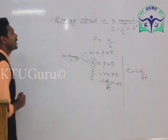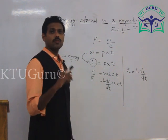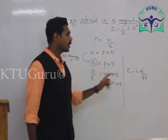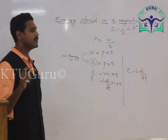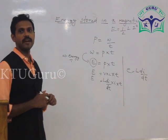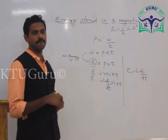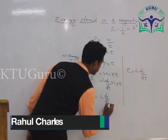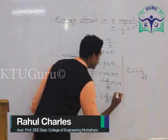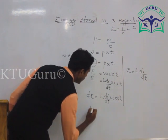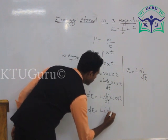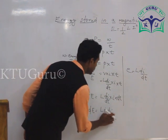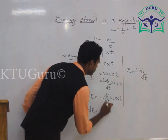To derive the energy stored in a magnetic field, consider some time T and a small interval of time dT. At that time, the small energy stored in the magnetic field can be expressed as dE equals L into dI by dT into I into dT. Therefore dE equals L I dI, because the dT terms cancel.